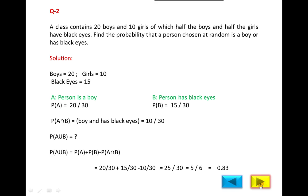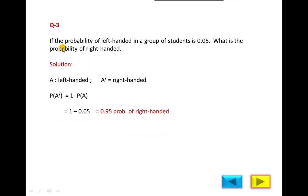Now next numerical: if the probability of left-handed in a group of students is 0.05, what is the probability of right-handed?